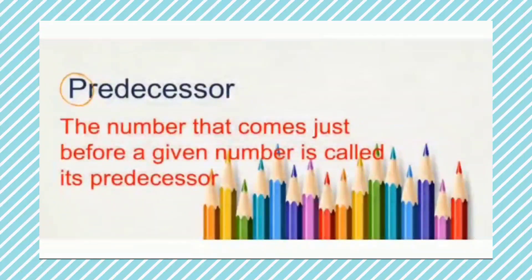What is predecessor? The number that comes just before a given number is called its predecessor. In simple words, the before number. To find the predecessor of a number, we have to subtract one from the given number. So the before number is called the predecessor.